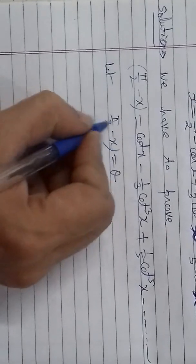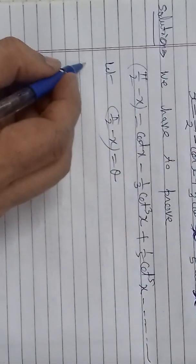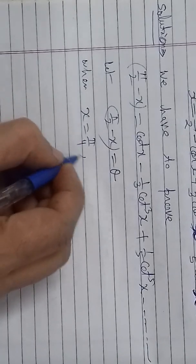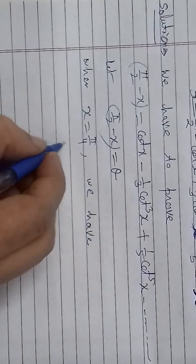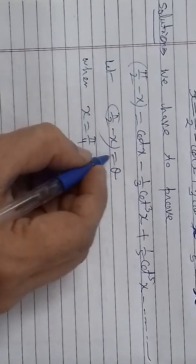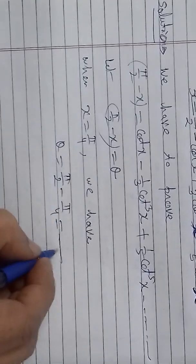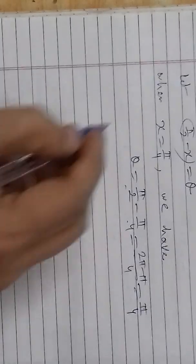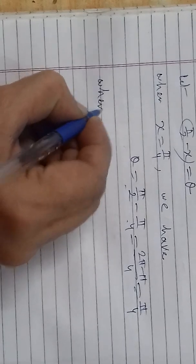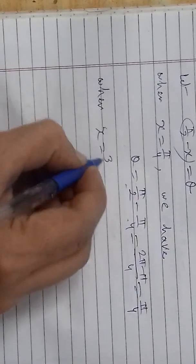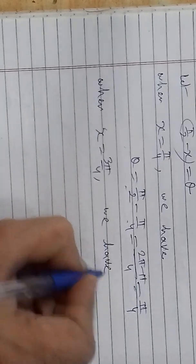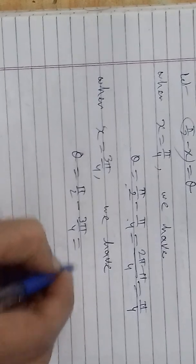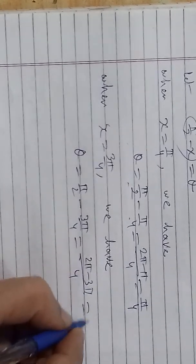After this substitution, let us check what range theta will vary in when x varies over the given range. When x equals π/4, theta equals π/2 minus π/4 — taking LCM of 4, we get 2π minus π, which gives θ = π/4. When x equals 3π/4, then θ = π/2 minus 3π/4 — taking LCM of 4, we get 2π minus 3π, giving θ = minus π/4.